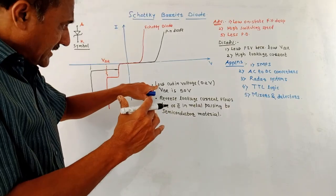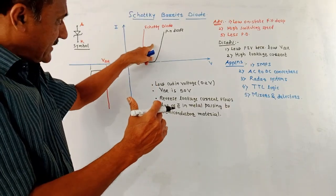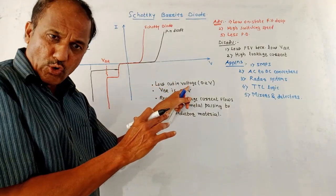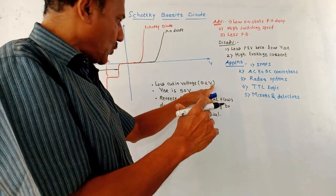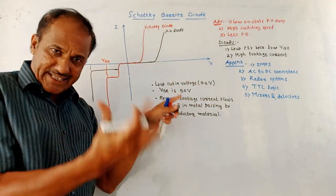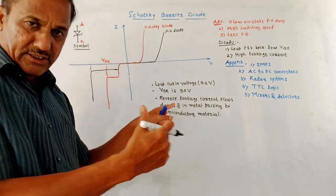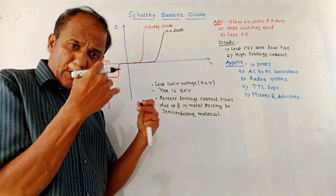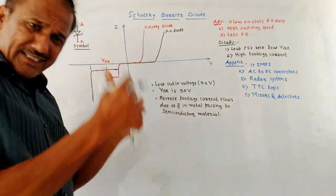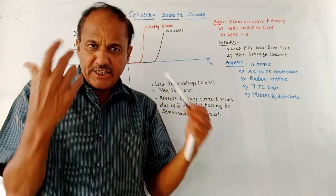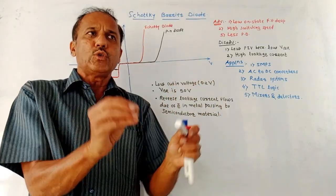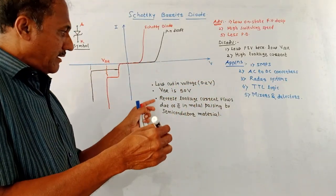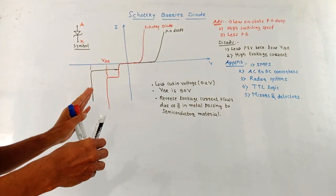The red colored diagram indicates the IV characteristics of the Schottky Barrier Diode. This diode has a low cut-in voltage, which is typically 0.2 volts. The breakdown voltage is less compared to the normal diode — it is around 50 volts. There is also a reverse leakage flow of current, which is due to the motion of electrons from the metal to the semiconductor, so there is a high leakage current flowing from metal to semiconductor.